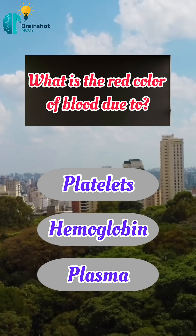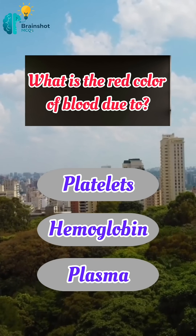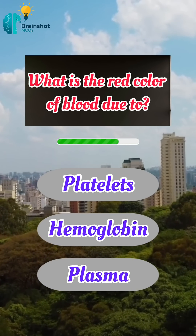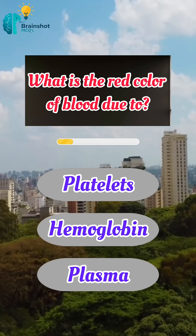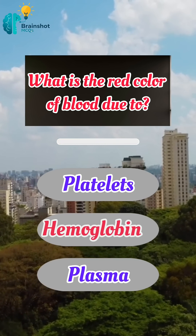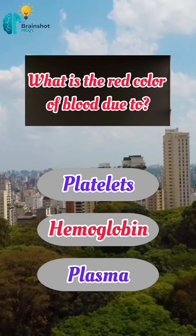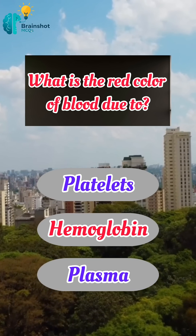What does the red color of blood do to? Correct answer: B, hemoglobin.